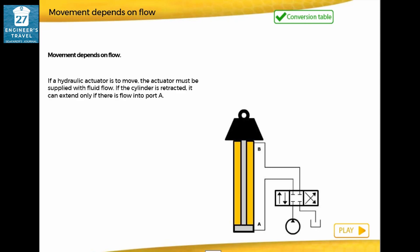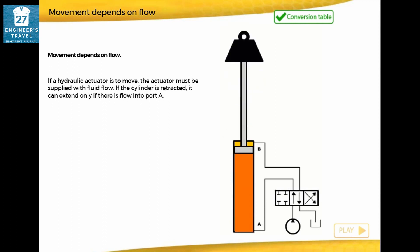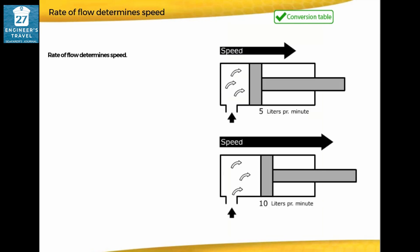If a hydraulic actuator is to move, the actuator must be supplied with fluid flow. If the cylinder is retracted, it can extend only if there is flow into port A. The rate of flow determines speed — the speed of the actuator depends upon the rate of flow. The faster the fluid flow to the actuator, the faster the actuator moves.